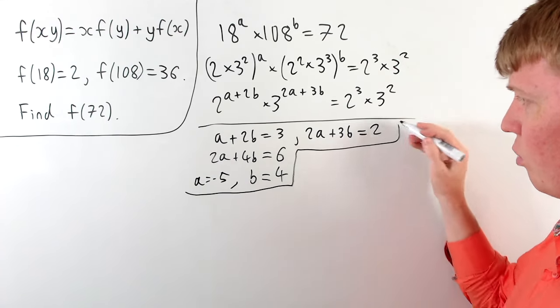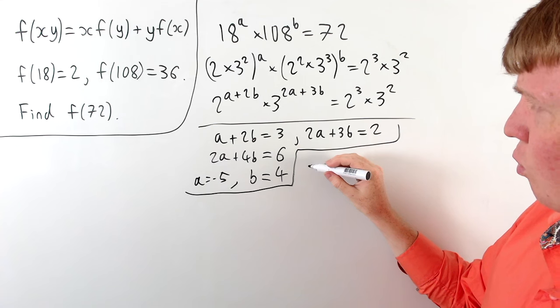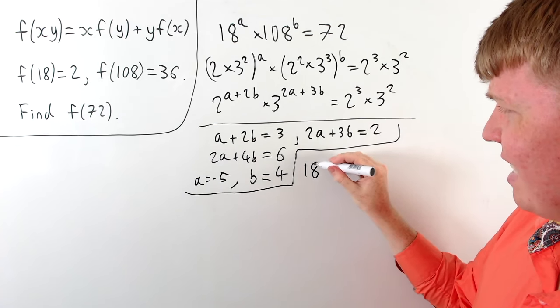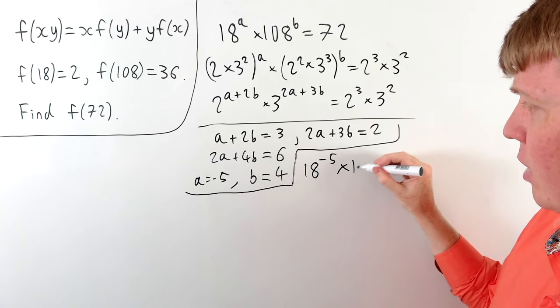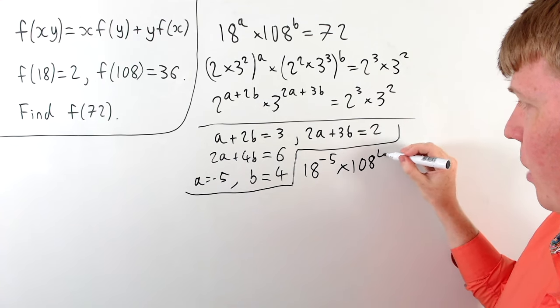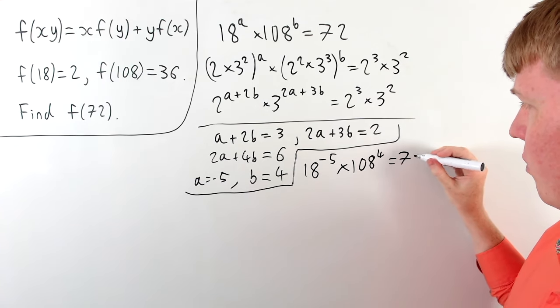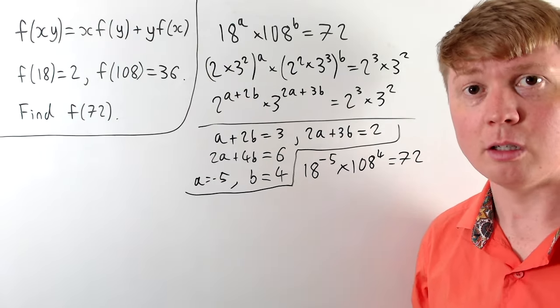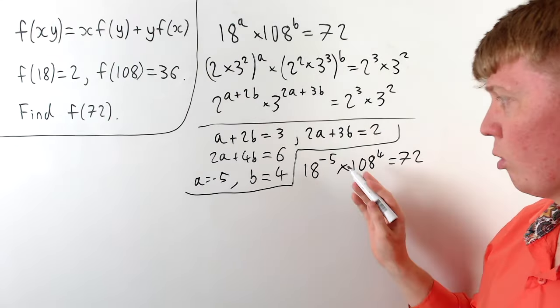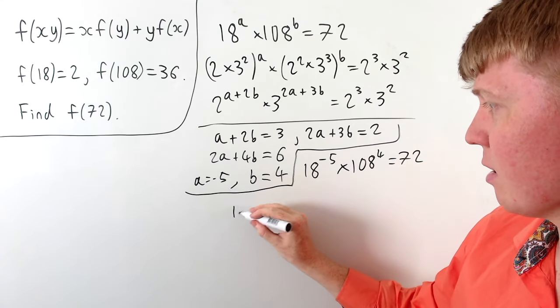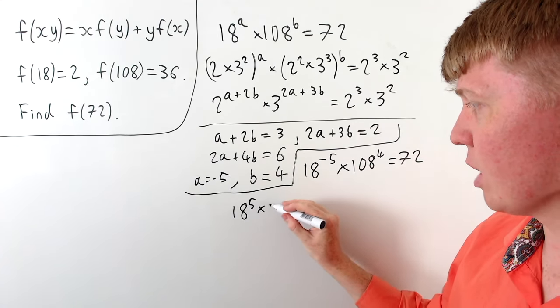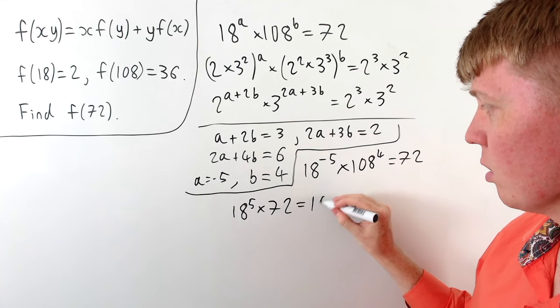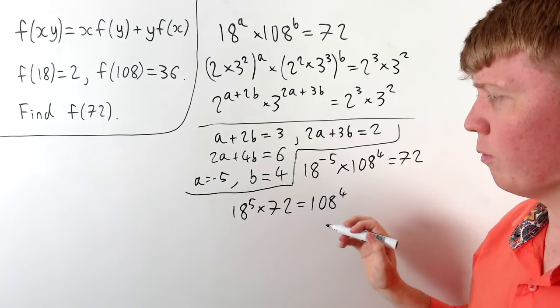So then this gives us our conclusion here is we actually need to do 72 is 18 to the power of negative 5 times 108 to the power of positive 4 gives us 72. But then to put it into a format where we'd be able to use our original functional equation we would instead of having the negative power we could write this as 18 to the power of 5 times 72 equals 108 to the power of 4.